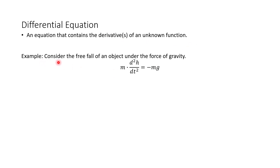For example, consider the free fall of an object under the force of gravity. Notice this is an equation — you see an equal sign and a derivative present. What we don't know is the original function. Because this is the second derivative of h with respect to t, the unknown function is h. Differential equations are these types of equations that involve derivatives.